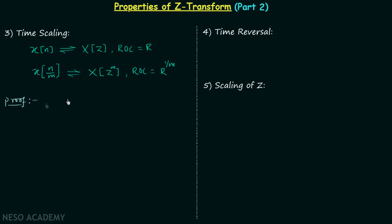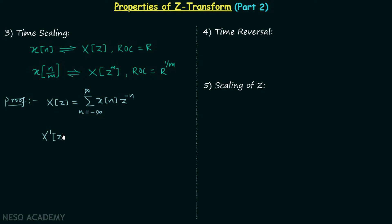Now we will prove this property. Signal X(n) has Z transform X(z), and we know X(z) is equal to the summation from n = -∞ to ∞ of signal X(n) multiplied by Z^(-n). We have a new signal X(n/m) and we are required to prove that this new signal has Z transform equal to X(z^m). X'(z) will be equal to the summation from n = -∞ to ∞ of X(n/m) multiplied by Z^(-n). Now let's say n = k·m.